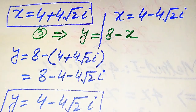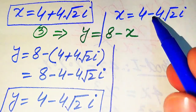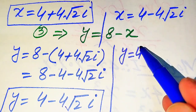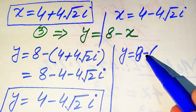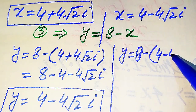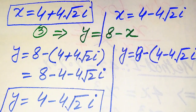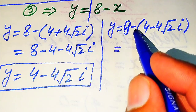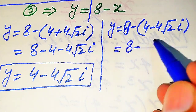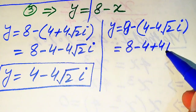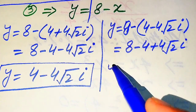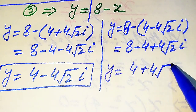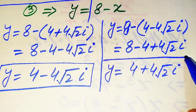Further, we substitute the second value of x in equation number 3. It becomes y equals to 8 minus x, where x is 4 minus 4 times square root of 2 times iota. Multiplying the negative sign on both values, it becomes 8 minus 4 plus 4 times square root of 2 times iota. So the corresponding value of y is 4 plus 4 times square root of 2 times iota.